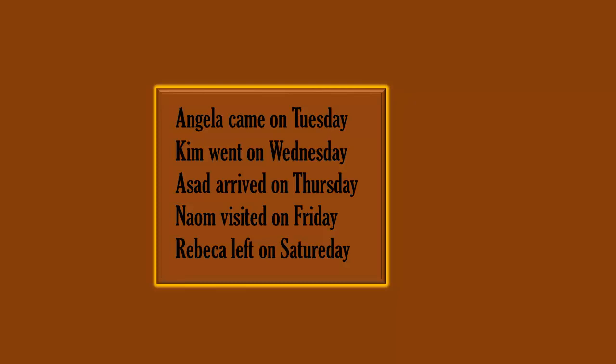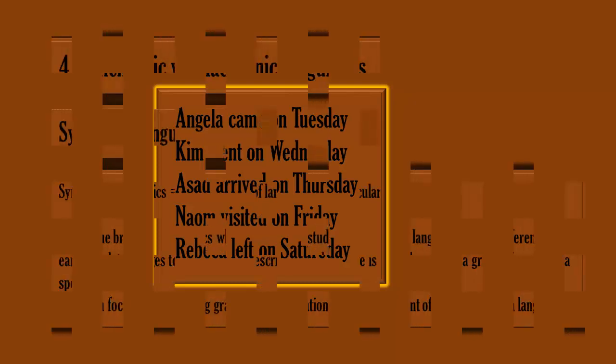In these sentences, the word 'came' has been replaced by 'arrived,' 'visited,' and 'left,' and 'Tuesday,' which is a noun, has been replaced by other nouns such as Wednesday, Thursday, Friday, Saturday, and so on.